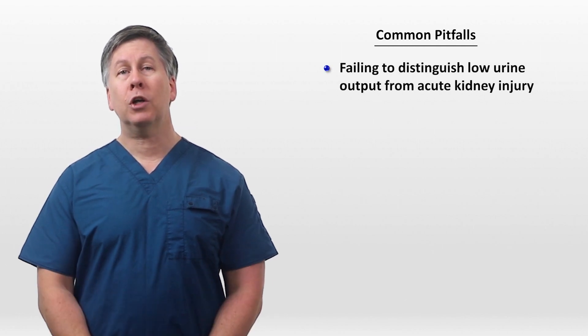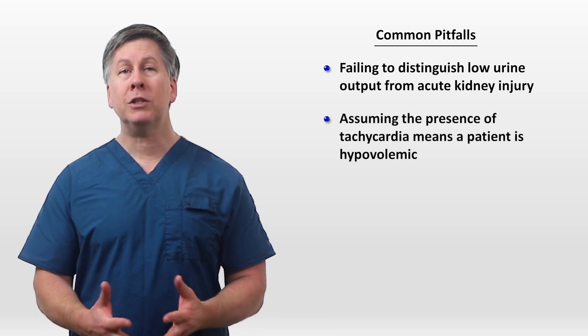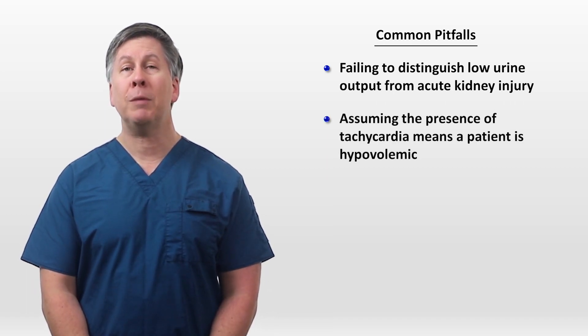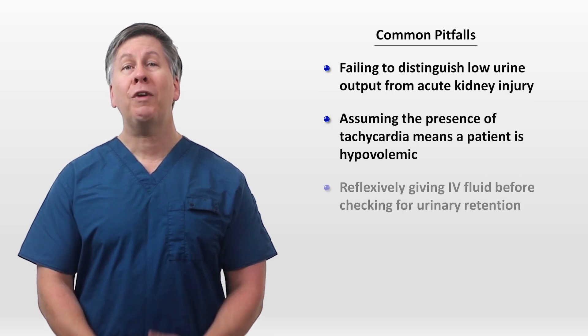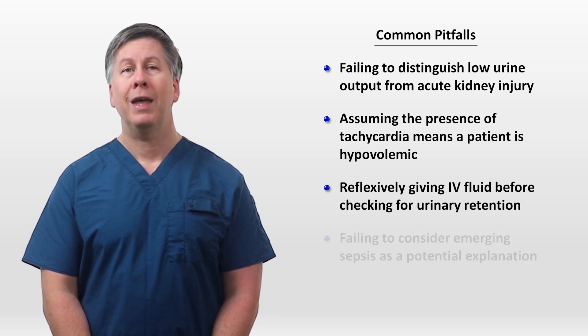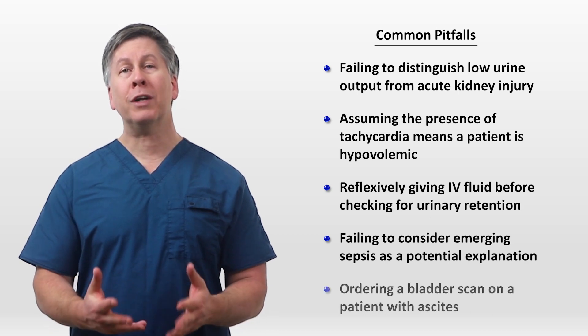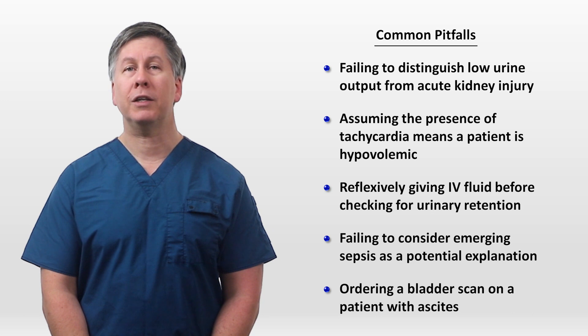Lastly, there are several common pitfalls in responding to a patient with low urine output: failing to distinguish low urine output from acute kidney injury; assuming tachycardia means hypovolemia requiring IV fluids; reflexively giving IV fluids before checking for urinary retention; failing to consider emerging sepsis as a potential explanation; and ordering a bladder scan on a patient with large ascites.